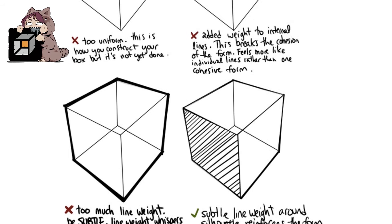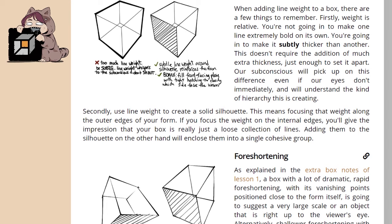Secondly, use the line weight to create a solid silhouette. This means focusing that weight along the outer edges of your form. If you focus the weight on the internal edges, you'll give the impression that your box is really just a loose collection of lines. Adding them to the silhouette, on the other hand, will enclose them into a single cohesive group.